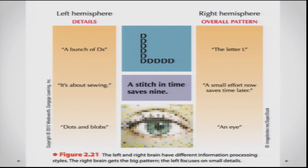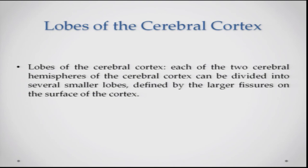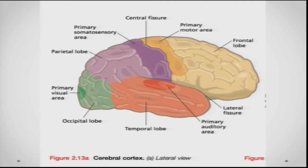Let us now move to the lobes of the cerebral cortex — the frontal, temporal, parietal, and occipital lobes — and discuss them in more detail. In this figure you can clearly see the parietal lobe, the frontal lobe, the occipital lobe, and the temporal lobe, along with the somatosensory area, primary motor area, and visual area lying within each of these lobes.